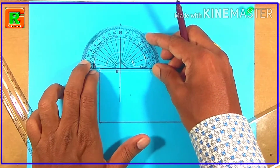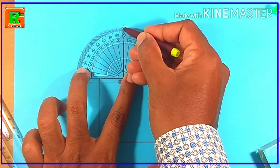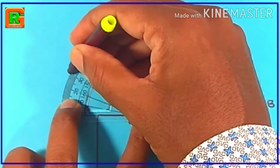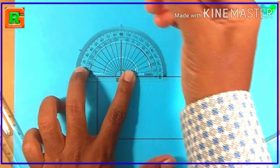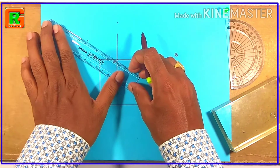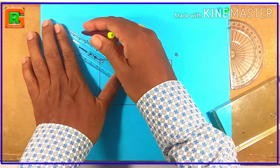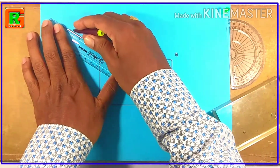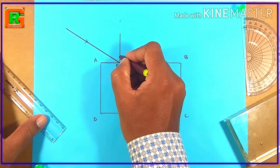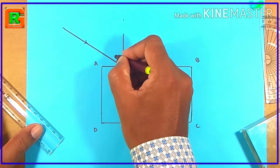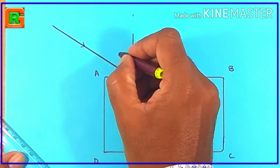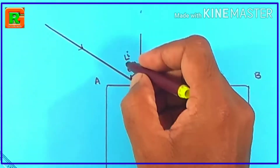Draw a line from the point of intersection where side AB of the rectangle and the perpendicular meet, such that it makes a 60-degree angle with the normal. This line represents the incident ray falling on the slab, and the angle it makes with the normal represents the angle of incidence. So the angle of incidence is 60 degrees — angle I equals 60 degrees.